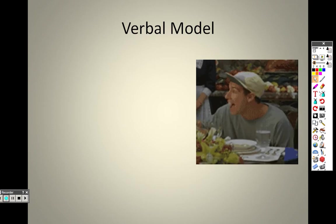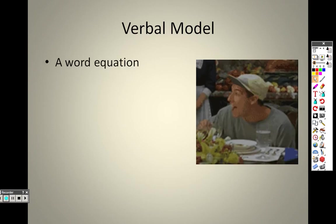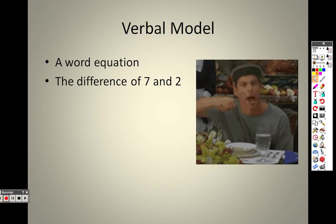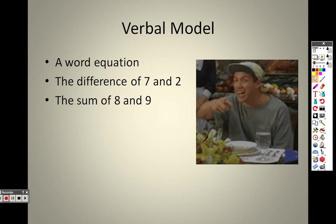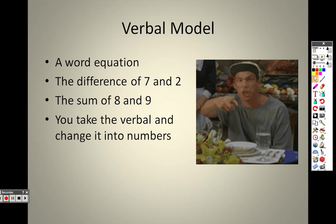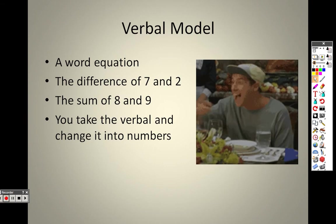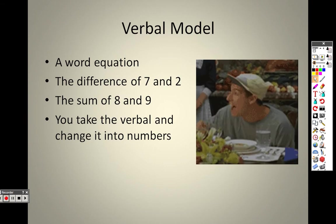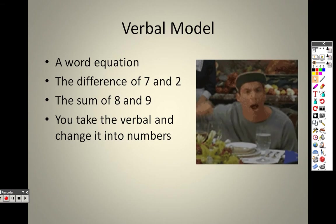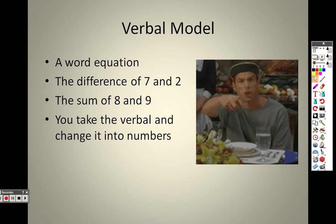Verbal models. Okay, a verbal model is a word equation. The difference of 7 and 2, that's just saying 7 minus 2. The sum of 8 and 9, sum means addition, right? You take the verbal and you change it into numbers. That's all you're doing with verbal models. You take whatever you're reading, like a word problem, for example, and you write them into numbers and equations.